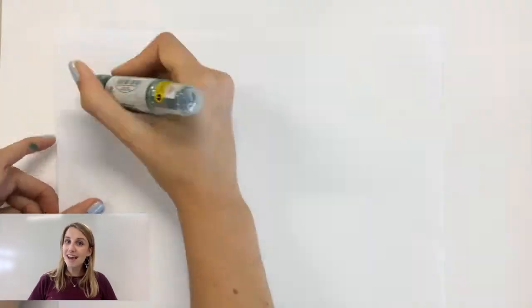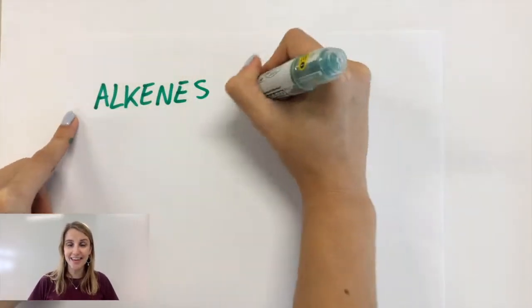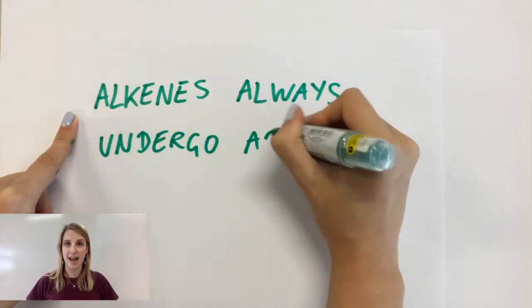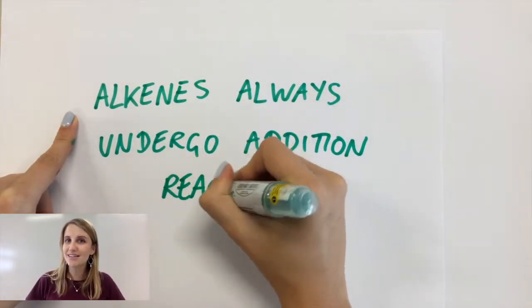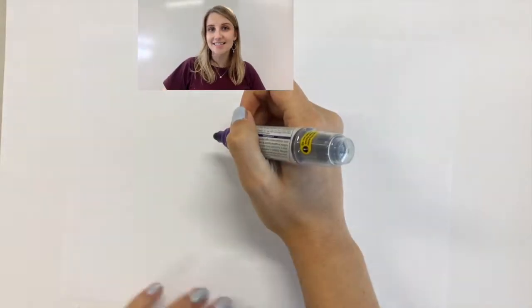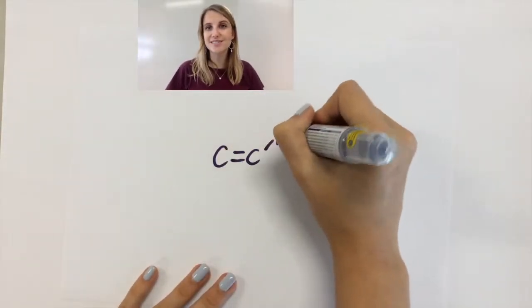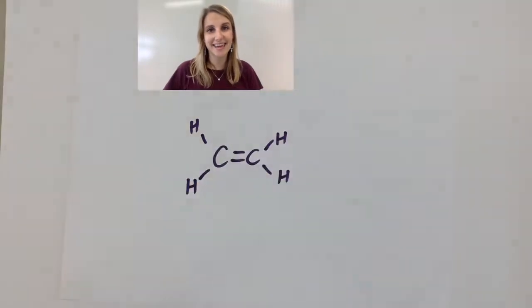What you should definitely know is that alkenes always undergo addition reactions and let's look at some examples of them doing that. Here's ethene as our central molecule and we're going to use this as our example alkene today.